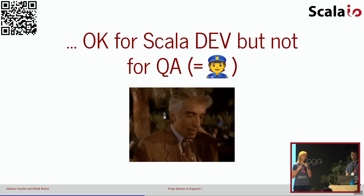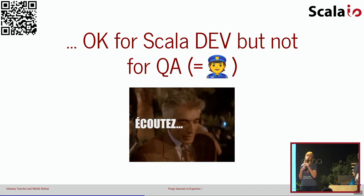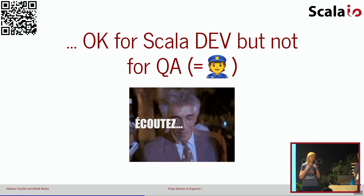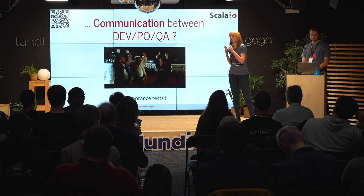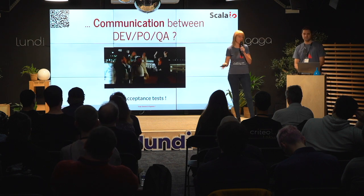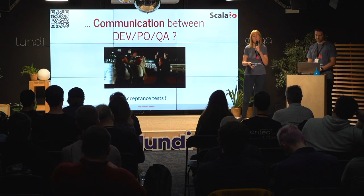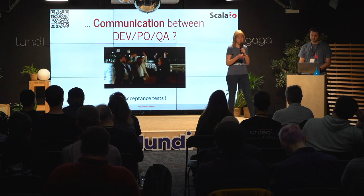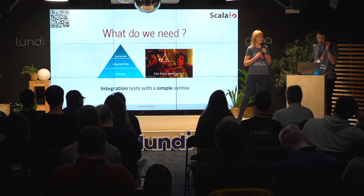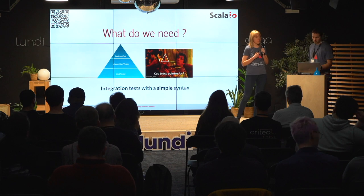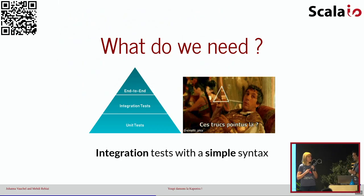Enfin, ce type de test s'adresse plutôt à des développeurs. Nous, on cherche des tests que pourrait utiliser notre ingénieur QA, et qui seraient lisibles. Pourquoi pas s'en servir comme outils de communication ? Parce que si c'est lisible par tous — QA, développeurs ou PO — on pourrait s'en servir pour faire des tests d'acceptance. Si je résume : on a trouvé une technologie pour faire des tests unitaires avec Topology Test Driver, mais il nous manque une brique pour faire des tests d'intégration et des tests de bout en bout. Et en plus, il nous faut une syntaxe simple pour exprimer ces tests.